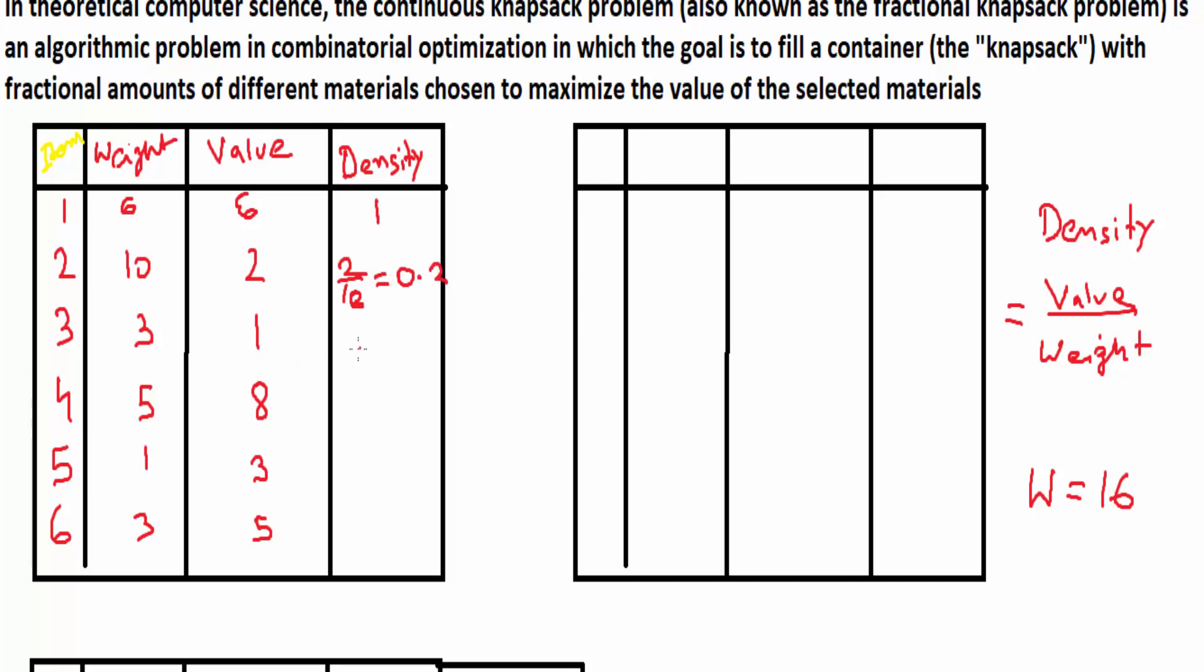Similarly, 1 upon 3, I'll just write the value directly: 0.33. This will be 1.6. This will be 3.0. This will be 1.66. Now since we have calculated the density for each of the items,